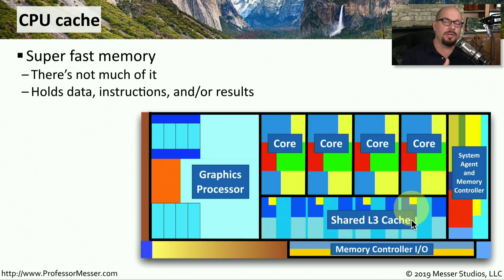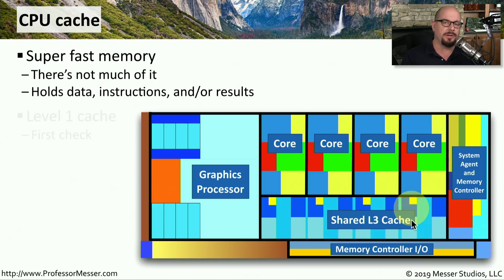Let's look at level one, level two, and level three caches to see how they help improve the performance of this processor. This cache memory is very fast memory, and it's meant as a temporary holding space for the transactions that are going through the processor.